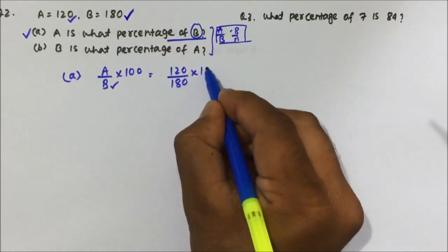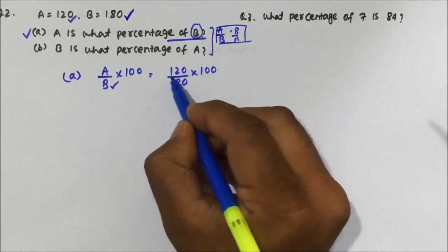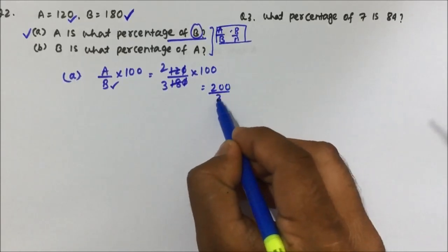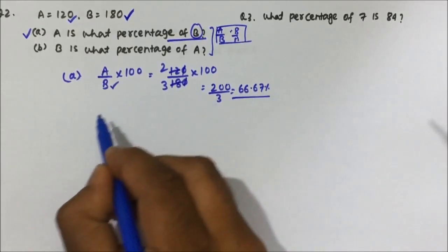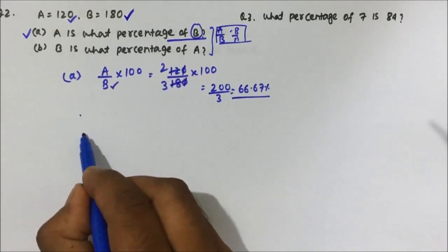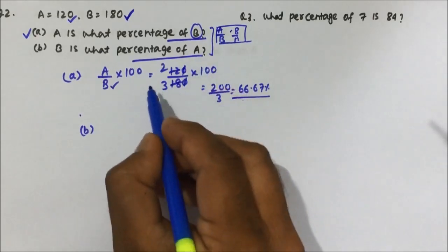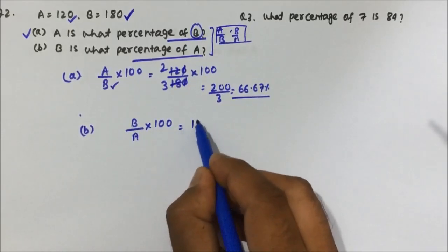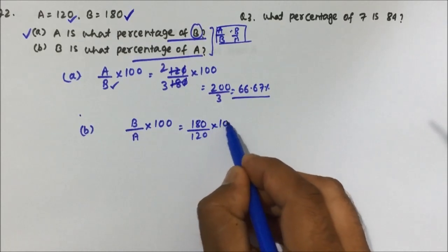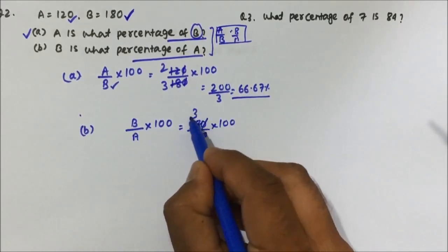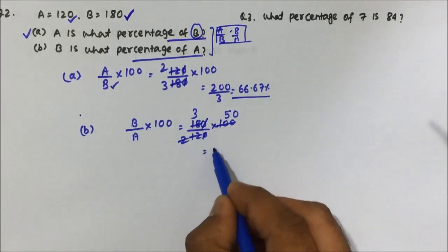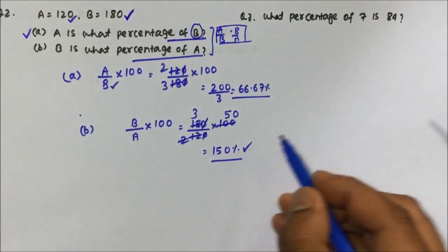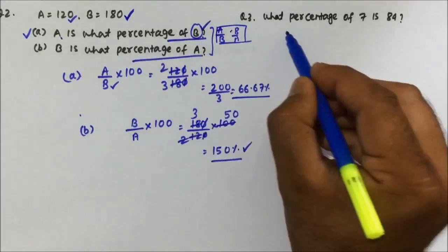So A is what percentage of B: (120 / 180) × 100 = 200/3 = 66.67%. Now, B is what percentage of A? B is being compared with A, so A goes down: (180 / 120) × 100 = 150%. So B is 150 percent of A.